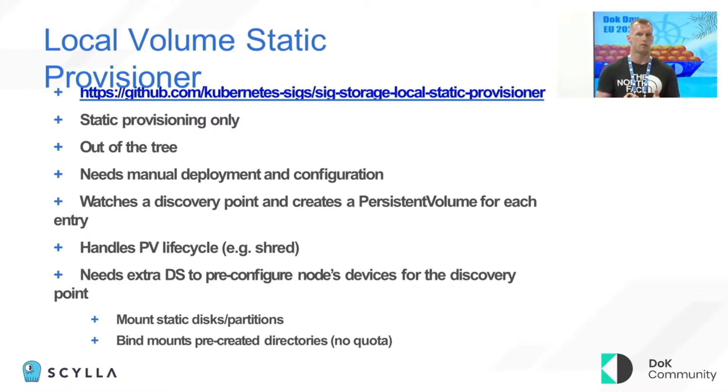It works by watching a discovery point on your file system and creating a persistent volume for each entry. It also handles the PV lifecycle, like shredding it when you need to recycle it. To set it up, you have to create a daemon set that reconfigures your node devices for that discovery point, either by mounting a static disk partition or the whole disk, or you can use bind mounts with pre-created directories, but you get no quota for that.